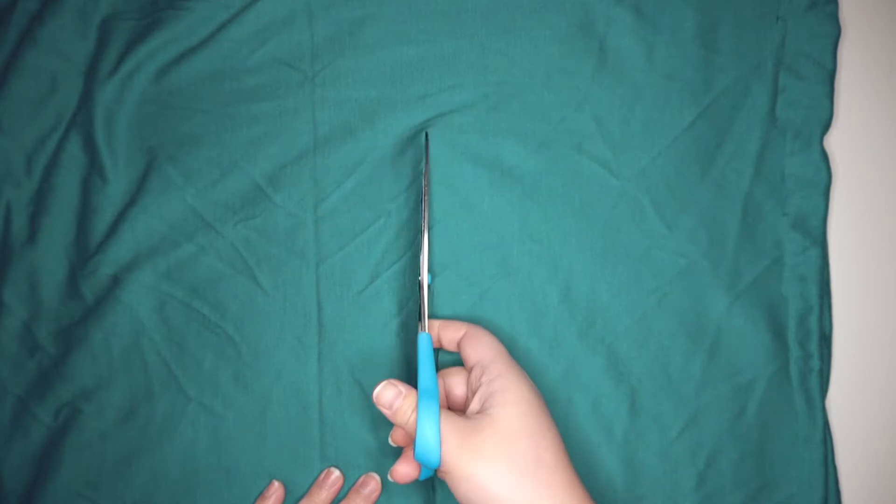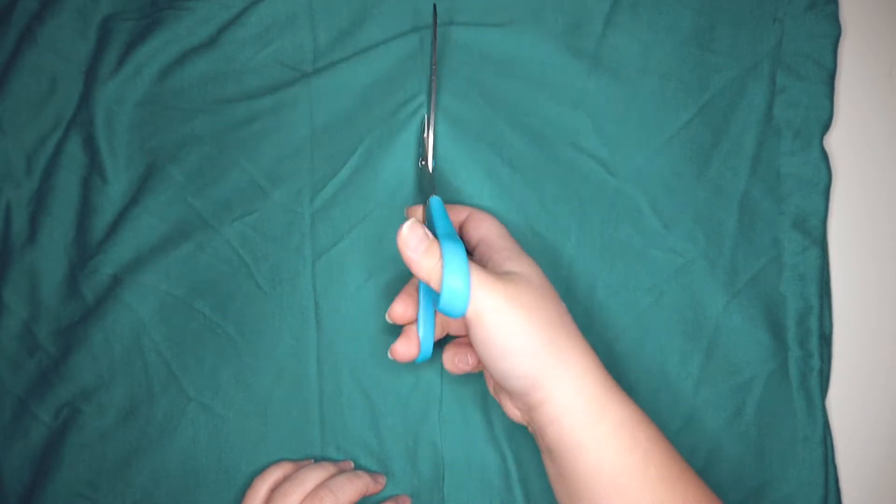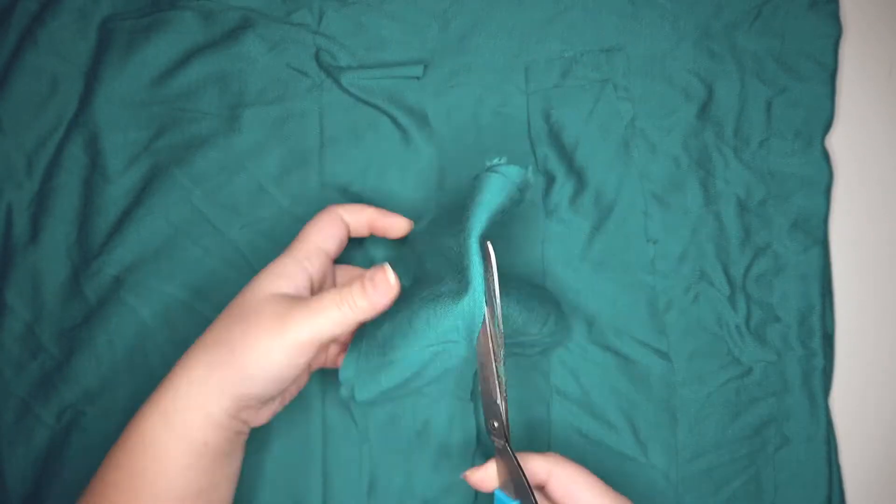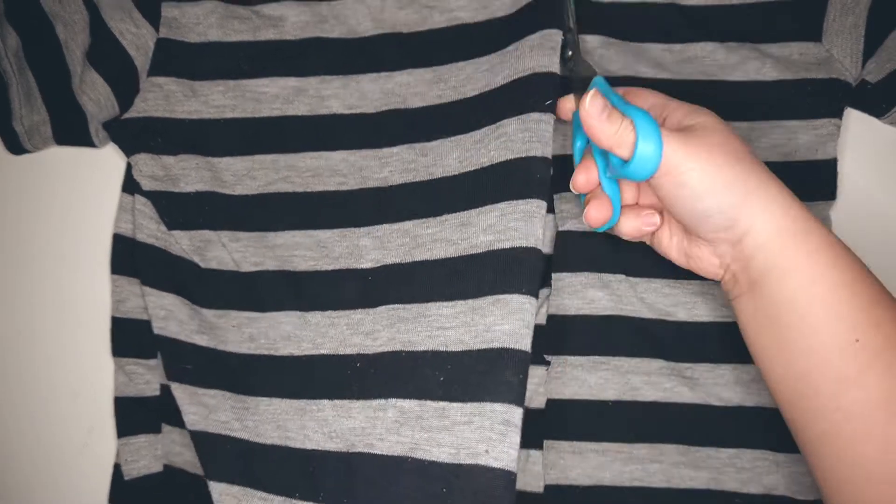I took the scrap fabric that I have at home as well as this old t-shirt that I found laying around. You can always just use that one t-shirt, but I wanted to try and add a fun little color to the toy so I added that turquoise fabric.